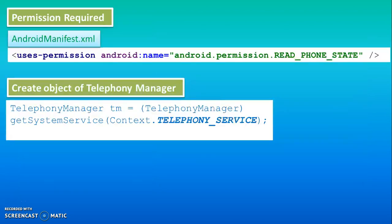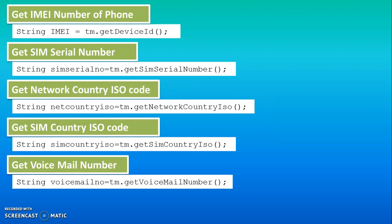First, you have to add permission in the manifest file: READ_PHONE_STATE. This permission is used to take the information of your phone. Next, you have to create an object of TelephonyManager, because under this class some methods are available. You should use the statement: TelephonyManager object = getSystemService(). For taking the IMEI number of the phone, declare a string variable and use tm.getDeviceId().